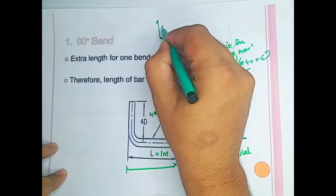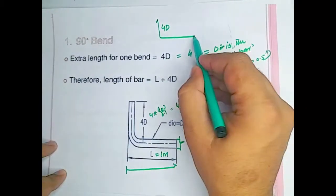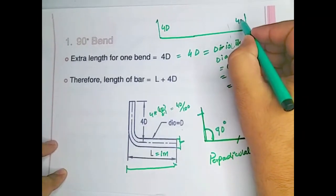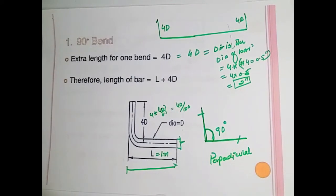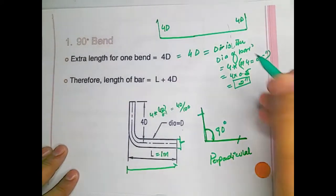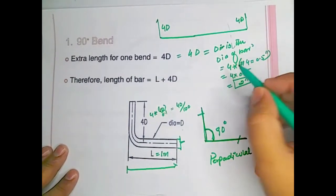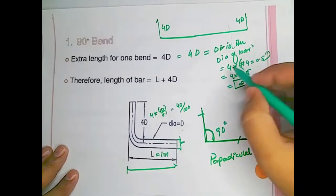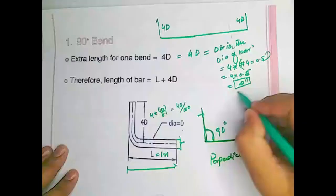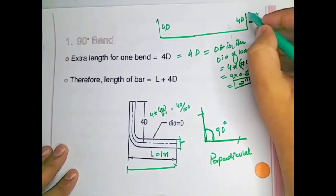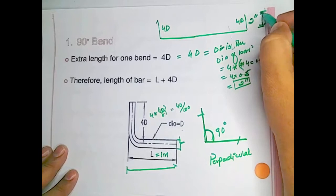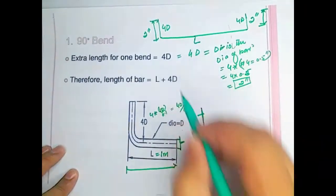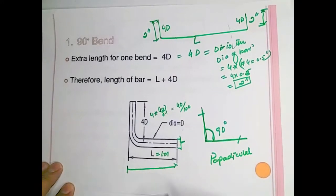The extra length for one single-sided bend is 4 × d. If we want to provide this bend on both sides, we add 4d to each side. Here, d is the diameter of the bar. If the bar is #4, that means 0.5 inches, so 4 × 0.5 = 2 inches of extra length on each side.